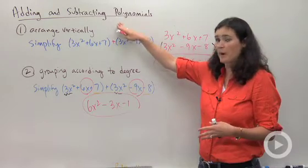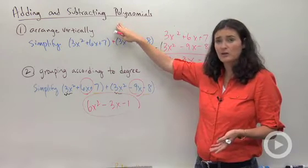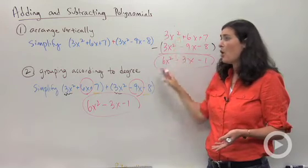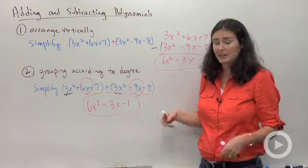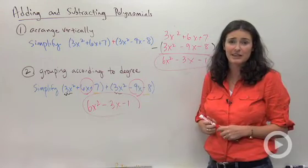So when you guys see these kinds of problems, adding and subtracting polynomials, it's up to you if you choose to rewrite it vertically, or if you like to do this grouping according to degree. Either way is fine. Just make sure you're really precise with your positive and negative signs.